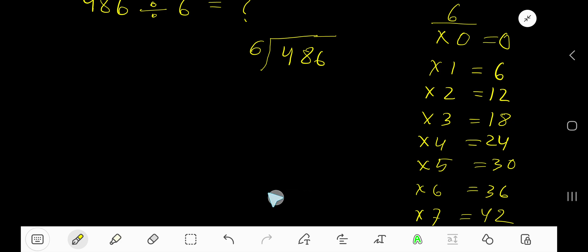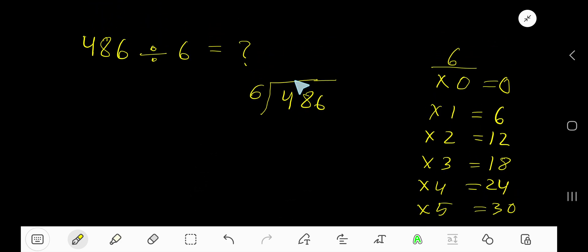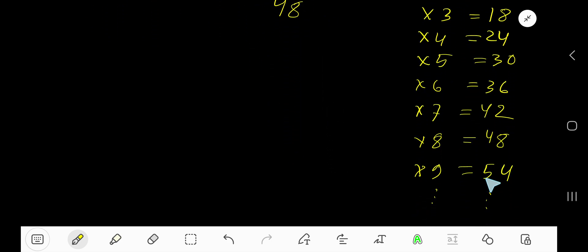6 times 6 is 36. 6 goes into 4 how many times? 0 times, as 4 is less than 6. 0 times 6 is 0. Subtract, then bring down this digit 8. 6 goes into 48 how many times?